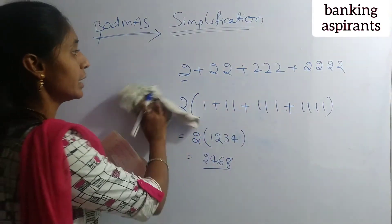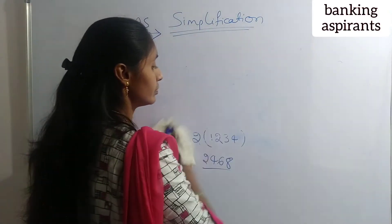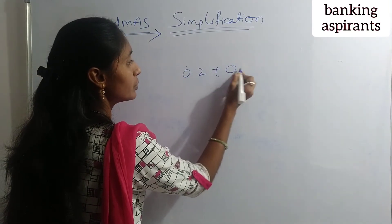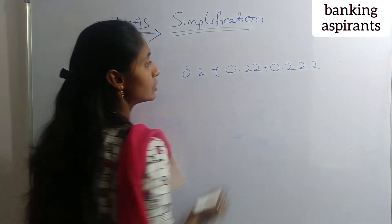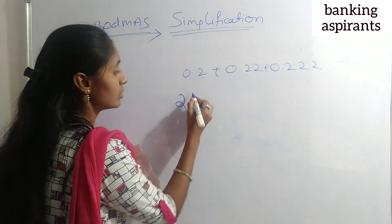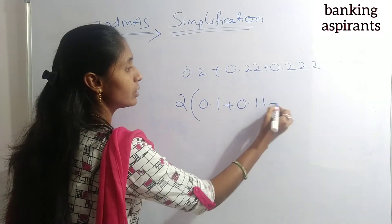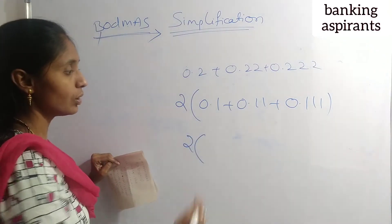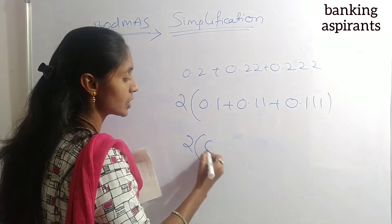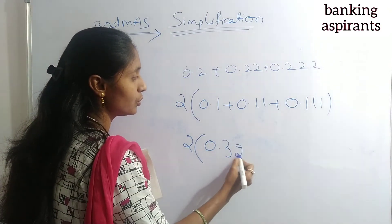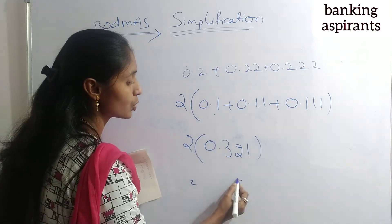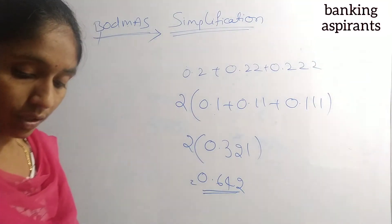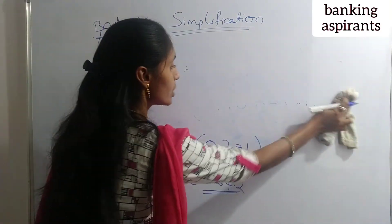Next, the same problem in decimal values: 0.2 plus 0.22 plus 0.222 plus 0.2222. Take 0.2 as common: 0.2 into (1 plus 1.1 plus 1.11 plus 1.111). Sum of the bracket terms in descending order: 0.3, 0.2, 0.1 giving 0.6. So 2 times 0.3 is 0.642. The answer is 0.642.